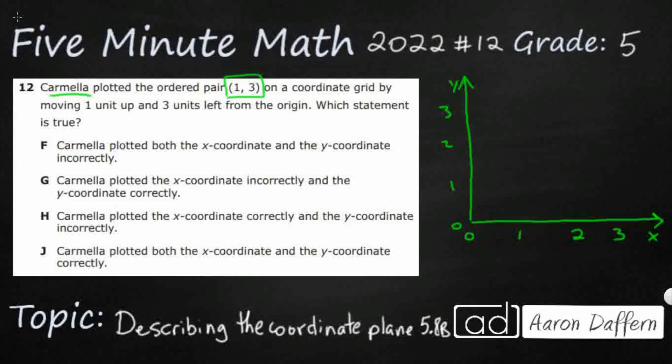Carmela moved 1 up and 3 left from the origin. So which statement is true? Let's make sure we understand what the origin is. Your origin is where the 2 axes meet — that's where you have (0, 0). So if you're looking at an ordered pair for the origin, it's the starting point, where the 2 axes meet: (0, 0).